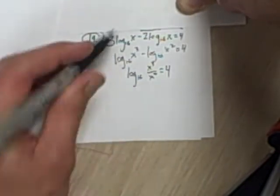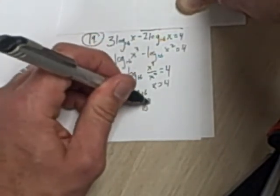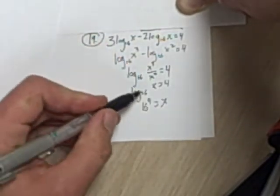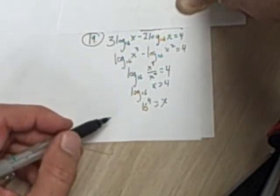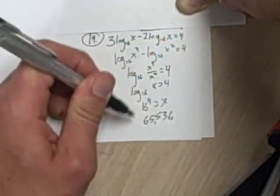I'm just going to reduce that right now. x cubed divided by x squared is x. Rewrite this as an exponent statement, and then 16 to the fourth power, do that in your calculator if you don't want to do that in your head, 65,536.